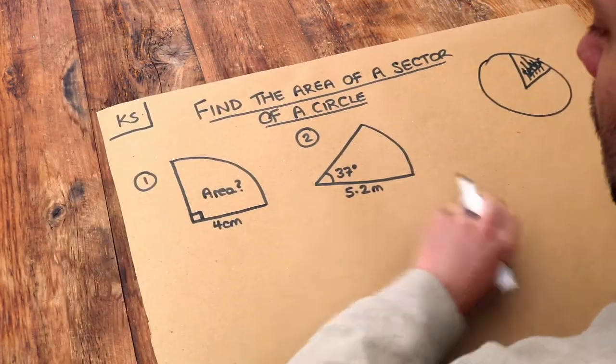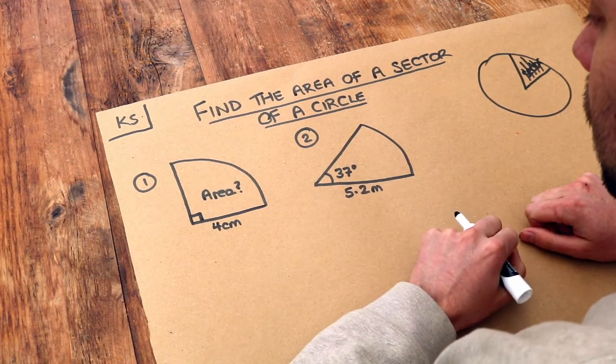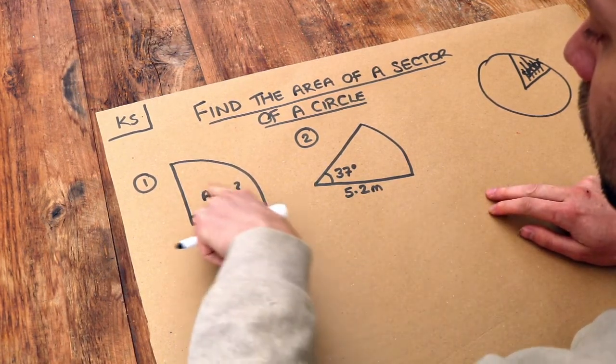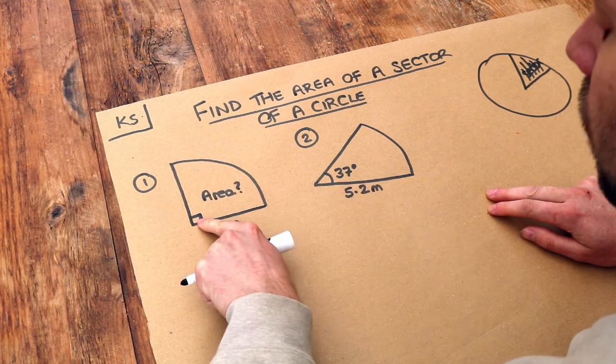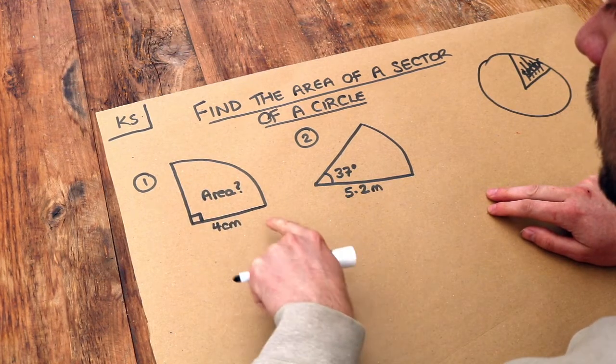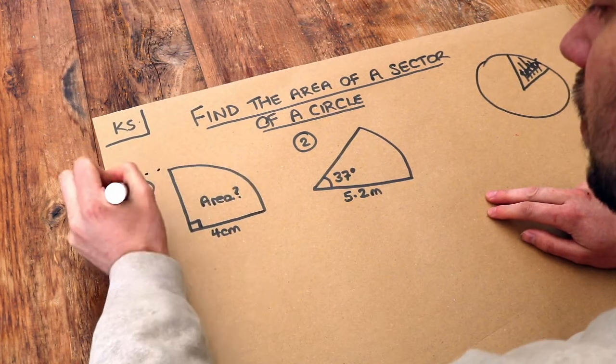Now we want to find the area of each of these sectors. I've purposely made the first one a bit easier. I've used a right angle here because you can see that this is a quarter of a circle. If I was to continue the circle on,